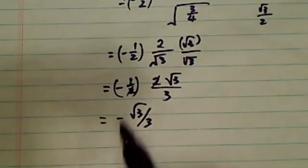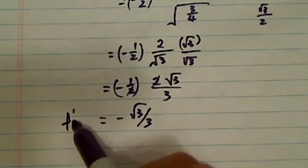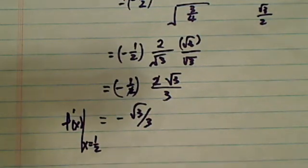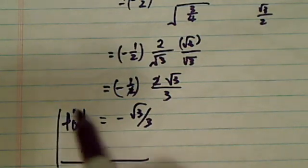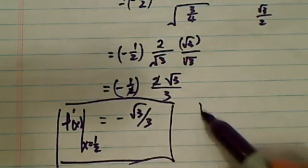So this is the slope of the tangent line, f'(x) evaluated at x equals one-half. Here is the answer. This isn't too bad. Have a confident day.